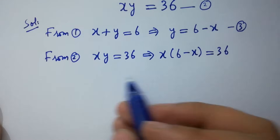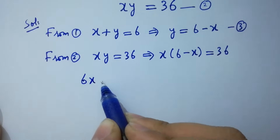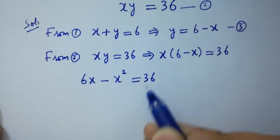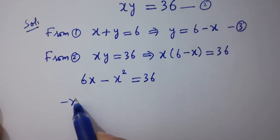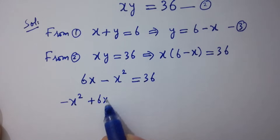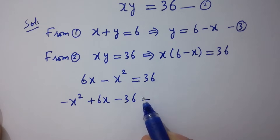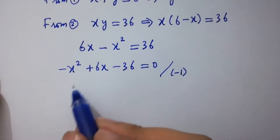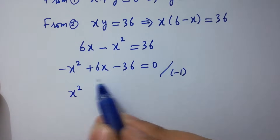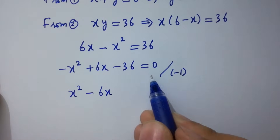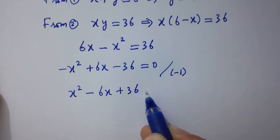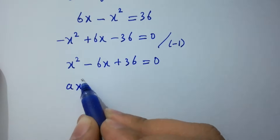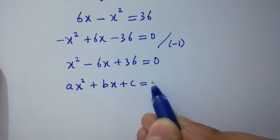Simplifying: 6x minus x squared equals 36. Rearranging, negative x squared plus 6x minus 36 equals 0. Dividing by negative 1 on both sides gives x squared minus 6x plus 36 equals 0, which is a quadratic equation of the form x squared plus bx plus c equals 0.